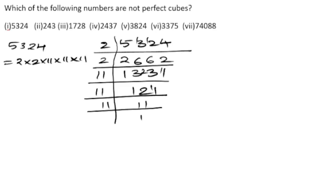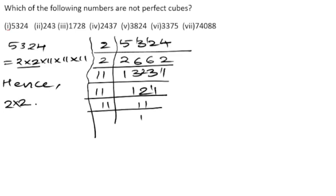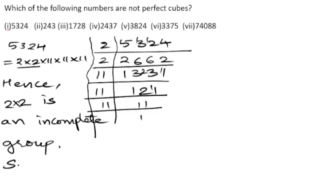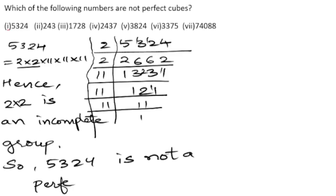It is clearly visible that 2 is not appearing three times — only two 2s are present. So 2 × 2 forms an incomplete group. Hence, 5324 is not a perfect cube.